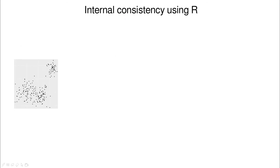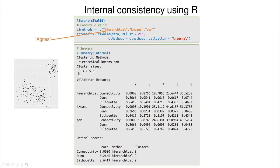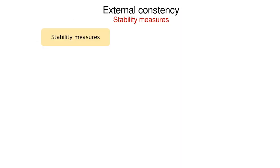Let's try this in R. We use the clValid library — clustering validation — and try three methods: hierarchical, k-means, and PAM. We call the clValid function, trying from two to six clusters and using internal validation. This automatically gives information about all cluster sizes from two to six with different metric values. According to all three metrics, k equals two is the winner, and as a bonus we get method selection — hierarchical clustering is the best according to these internal consistency methods.